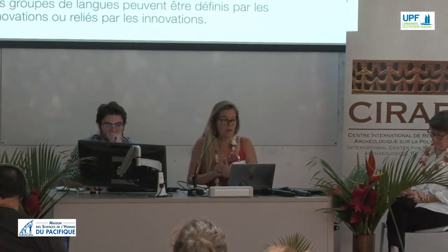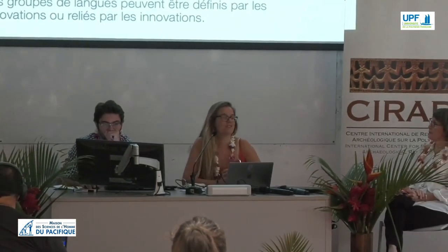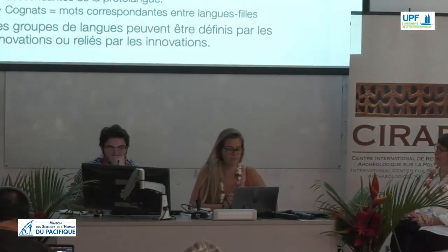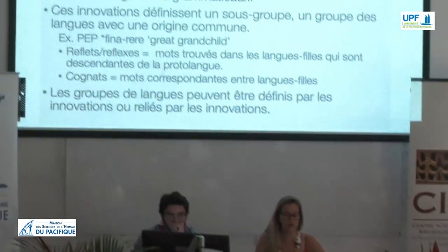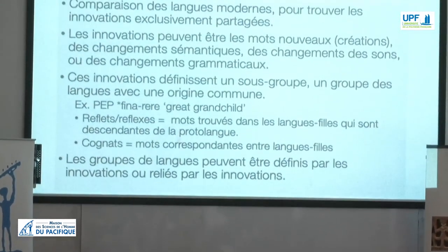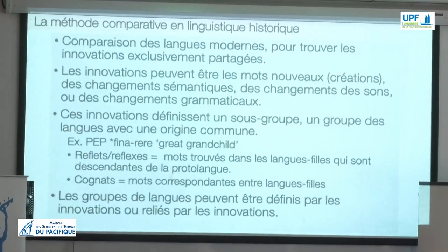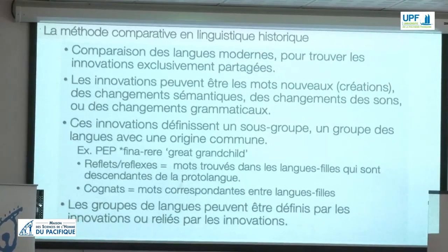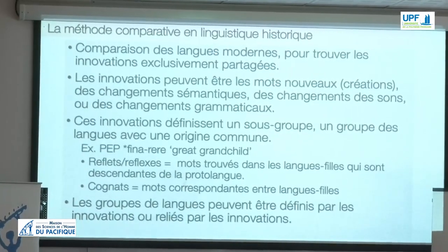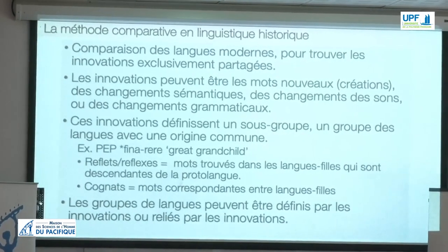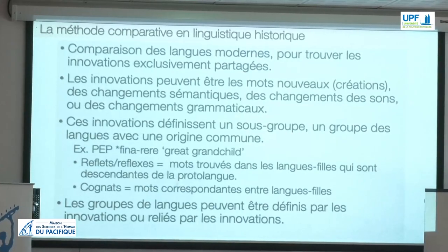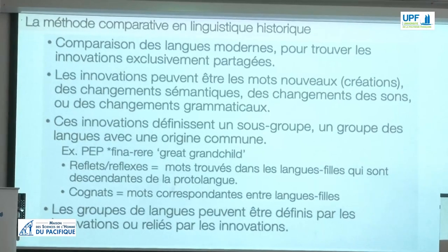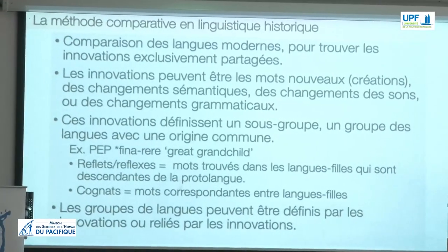Some notes on the comparative method of historical linguistics and how linguistic relationships are constructed. Our trees are built through detailed comparison of modern languages and finding exclusively shared innovations between them. These innovations define a subgroup, which is a group of languages that can be said to have a common origin. Innovations can be whole new words, changes in meaning of a word, changes in sounds within a word, or changes in grammatical features.